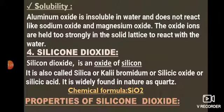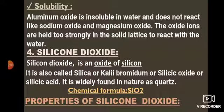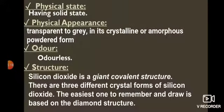Oxide number 4: silicon dioxide. Silicon dioxide is an oxide of silicon, also called silica, silicic oxide, or silicic acid. It is widely found in nature as quartz. Chemical formula: SiO2. Physical state: solid; transparent to grey in crystalline, amorphous, or powdered form; odorless. Note: the various names given are for general knowledge and exam preparation.